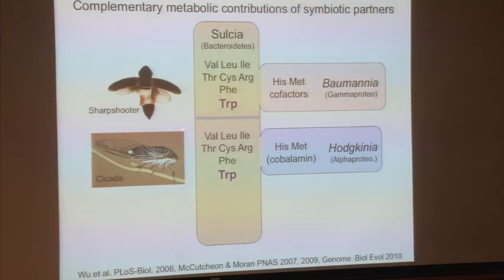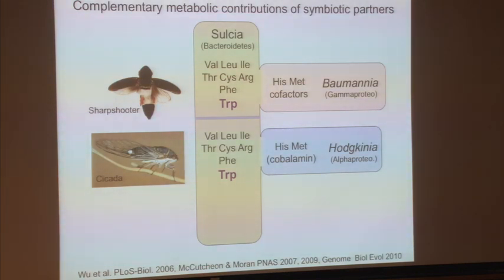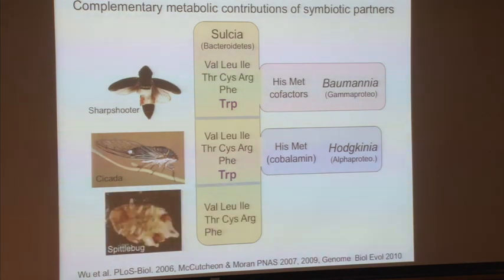In cicadas, they again have Sulcia making exactly the same eight amino acids, and their partner Hodgkinia — named after Dorothy Crowfoot Hodgkin who studied cobalamin — makes histidine and methionine. Again it's this perfect complementarity. Interestingly, Hodgkinia makes methionine using a cobalamin-dependent methionine synthase, so it carries around the burden of making cobalamin (vitamin B12) just for this one enzyme. About 10 percent of its tiny genome is devoted to the cobalamin pathway — a huge proportion.